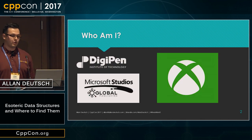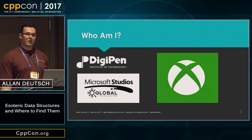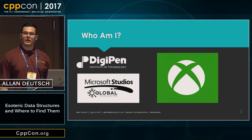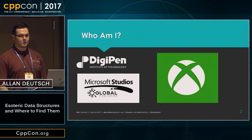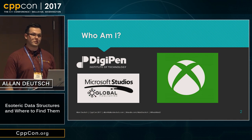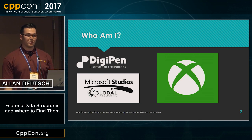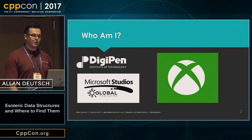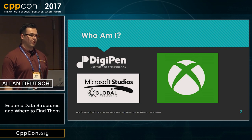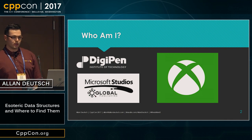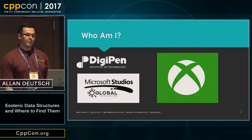You might be wondering who I am. I'm a student at DigiPen Institute of Technology — it's a small school in Redmond where we make video games. I'm studying for a computer science degree. I've interned as a software engineer at Microsoft Studio's global publishing team and as a program manager within Xbox in the advanced technology group, and I'll be returning once I graduate as a full-time employee there.